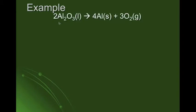Here is the chemical equation we'll be using: two moles of aluminum oxide decomposes to form four moles of aluminum and three moles of oxygen gas. It's already balanced. When we refer to mole ratios, we look at the coefficients — the big number at the beginning of each compound. So for every two moles of aluminum oxide, we have four moles of aluminum and three moles of oxygen — giving us ratios of 2:4, 2:3, and 3:4.